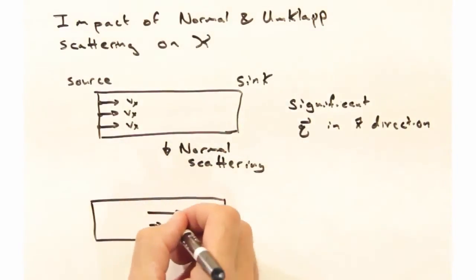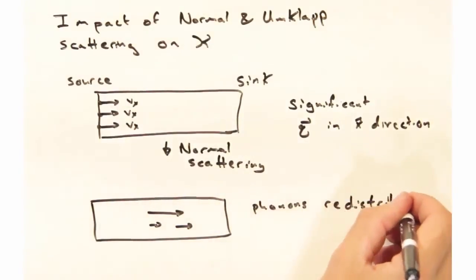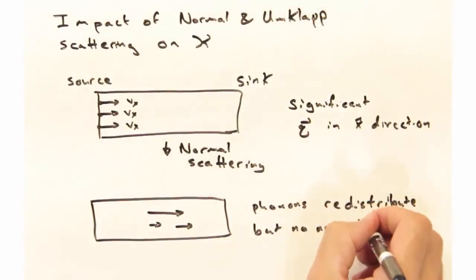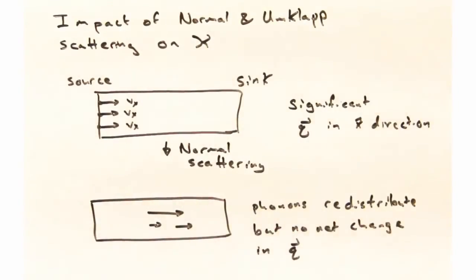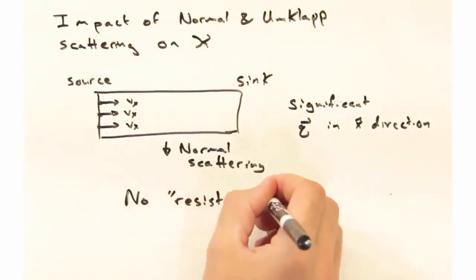If we imagine just normal scatterings happening, we may find a redistribution of the phonon momentum, but there's not going to be a net change in this q vector to the right. Therefore, there's effectively no resistance to transmitting heat.